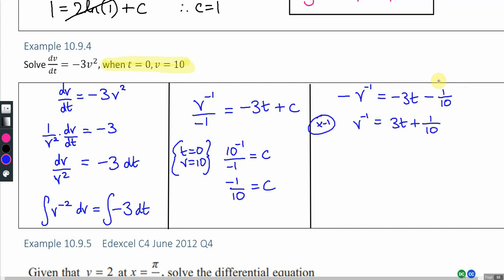That's already a little bit neater. What if the question had said give your answer in the form v equals a function of t? It didn't, so I didn't have to do the following. But what if it had said that? Well, I've got a bit more rearranging to do now. So v to the power minus 1 is actually 1 over v.